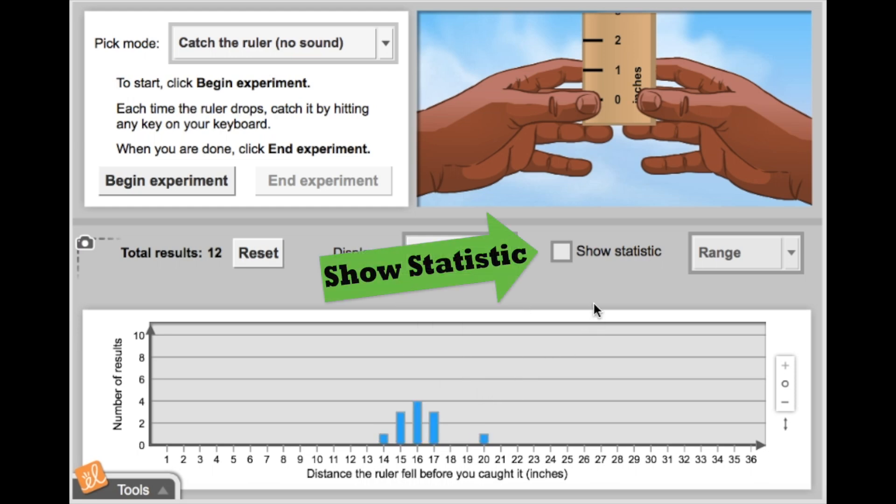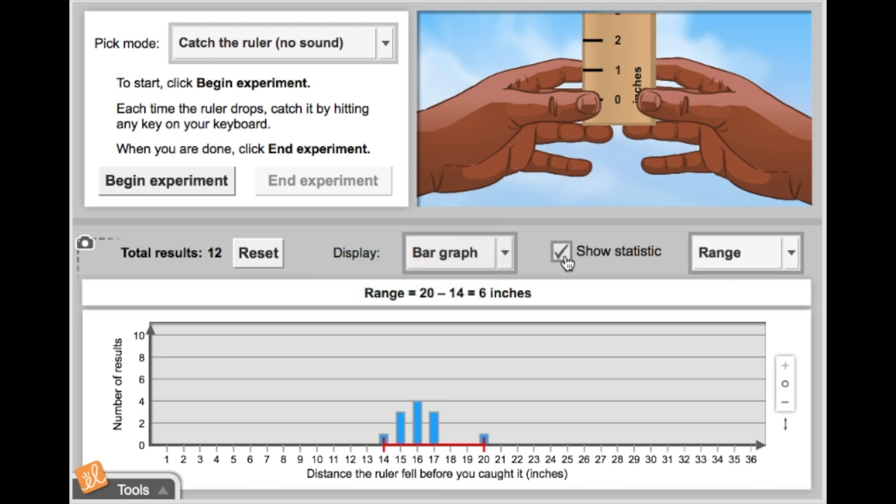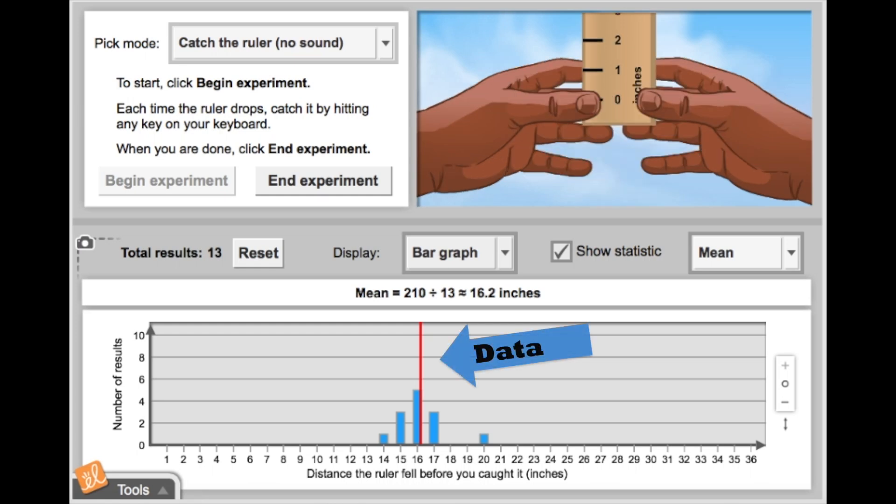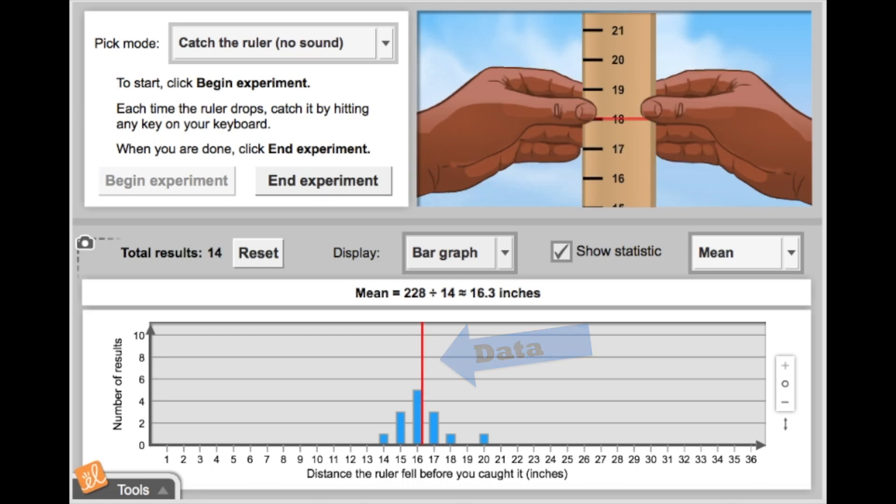I can also show the statistics of my data by clicking on the Show Statistics box and choosing Range, Mode, Median, or Mean. Now that I'm looking at the mean depicted on the bar graph, I wonder what would happen if I restarted my experiment. Hmm, isn't that interesting? I can add data points and watch as the statistic adjusts.